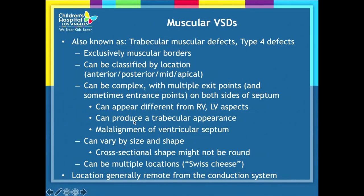Muscular VSDs, also known as trabecular muscular defects — the newest terminology, type IV defects — have exclusive muscular borders and are often classified by location: anterior, posterior, mid, or apical. They can be complex with multiple exit points, and this is one of the most important things — sometimes their entrance points are different from their exit points, so they can appear different from the RV and LV aspects. They can vary in size and shape, may have malalignment, and their location is generally remote from the conduction system.